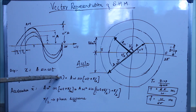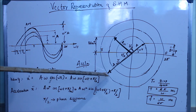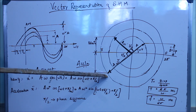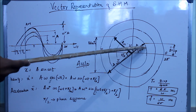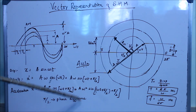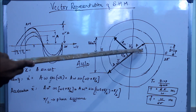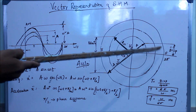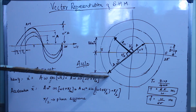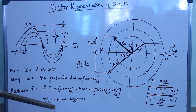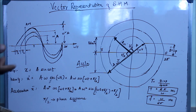One important thing to note: for values of ω greater than 1, the acceleration vector has the largest amplitude, followed by the velocity vector and then the displacement vector. If ω is less than 1, the displacement vector has the largest amplitude, followed by velocity and then acceleration.